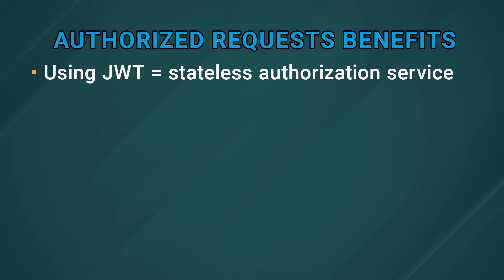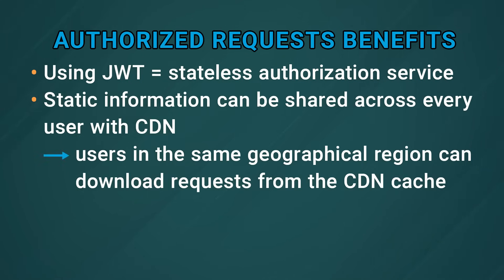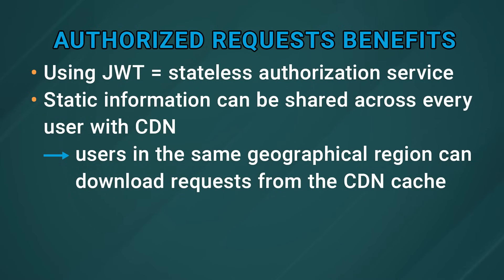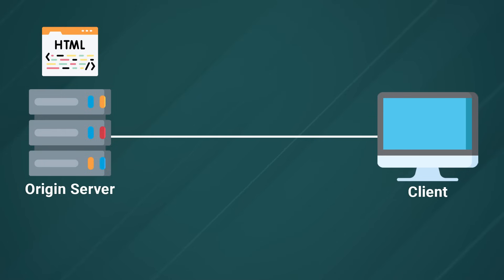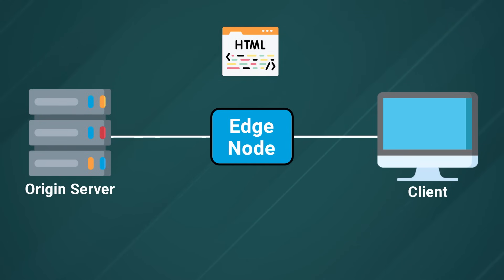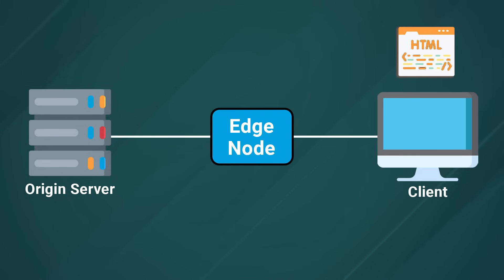As we saw with the last architecture diagram, if the origin server is going to return some private or authorized information that is static and can be shared across every single user, then you can take advantage of the CDN cache so that multiple users living within the same geographical region can download an authorized response from the CDN's cache instead of having to wait to pull it all the way from an origin server. This gets particularly interesting if you want to introduce the dynamic nature of edge compute — in theory you could have an origin server returning a static cached HTML page, and then use the dynamic nature of an edge compute runtime to inject personalized data into that static HTML, pulling data either from the JWT payload or from a key value store like EdgeKV.